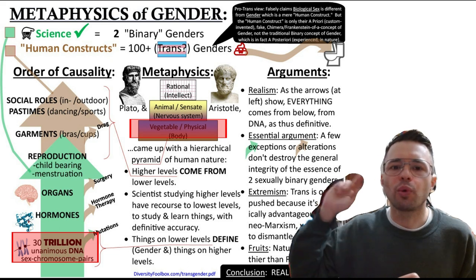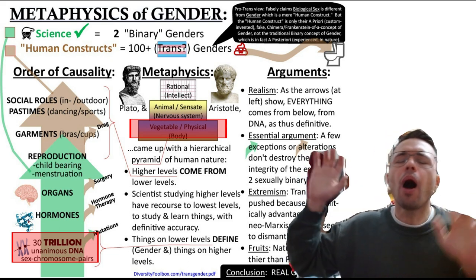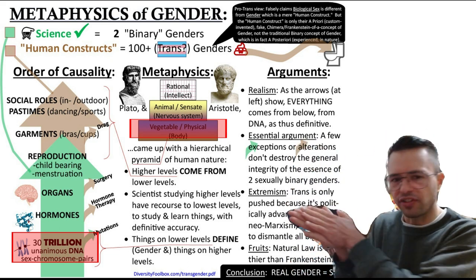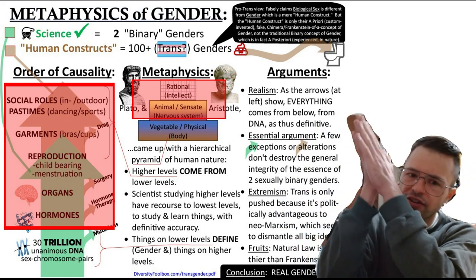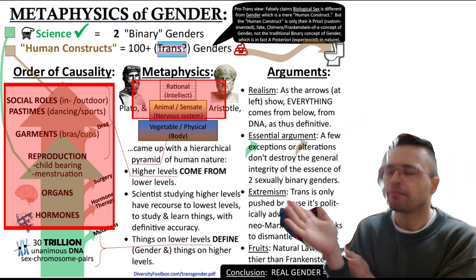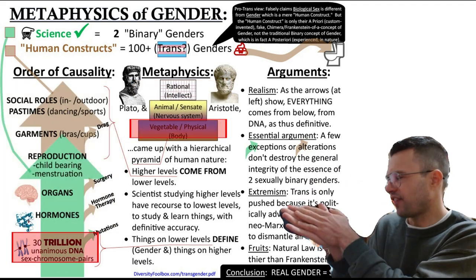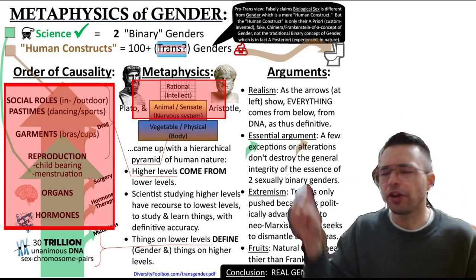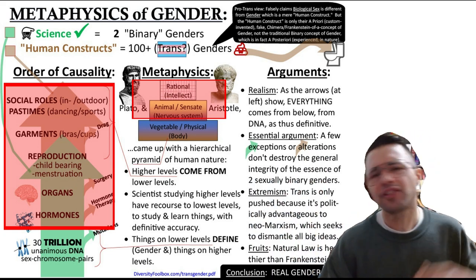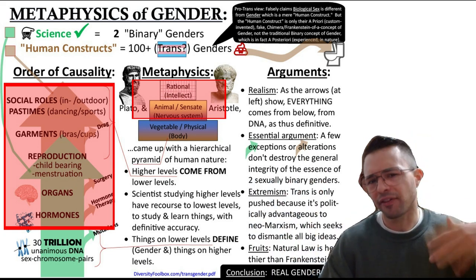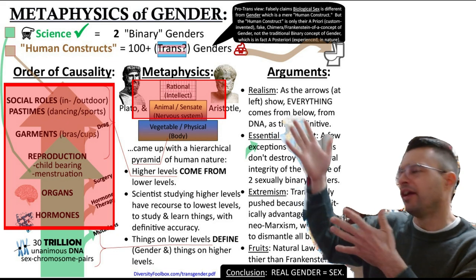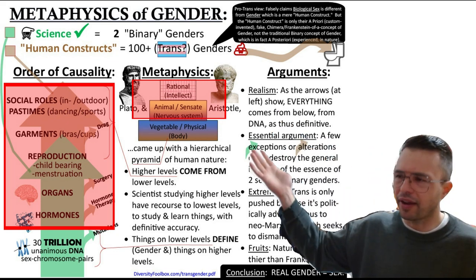Transgender advocates will pivot and say, oh, but that's biological sex, whereas gender is something different from sex. They may even elaborate and clarify. Sex is what is defined at birth, whereas gender is just a cultural human construct. And so, presumably, one may therefore redefine one's gender, since it's a mere human construct.